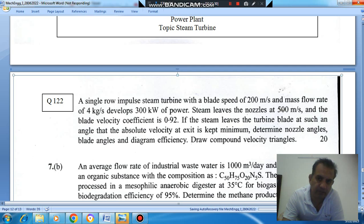If the steam leaves the turbine blade at such an angle that the absolute velocity at the exit is kept minimum, determine the nozzle angles, blade angles and diagram efficiency. Draw compound velocity triangles.